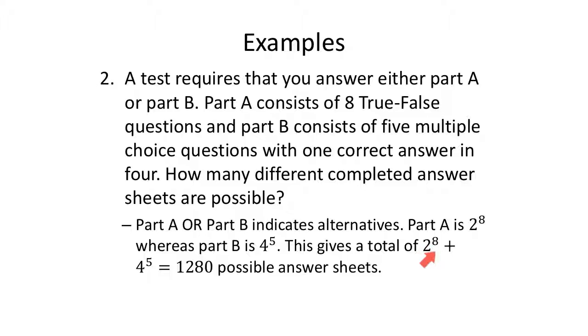This will give me a total of part A or, so add, part B. Two to the eighth plus four to the fifth, 1280 possible answer sheets. So this has 13 questions. This has more questions than our last one, but because we have part A or part B, right, we have fewer options possible.